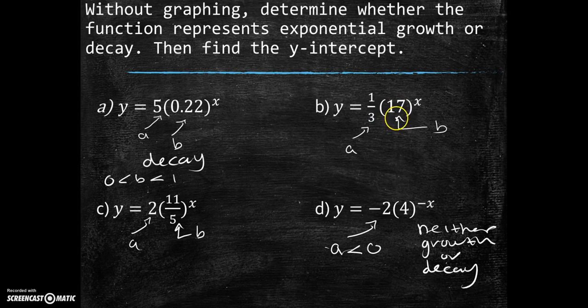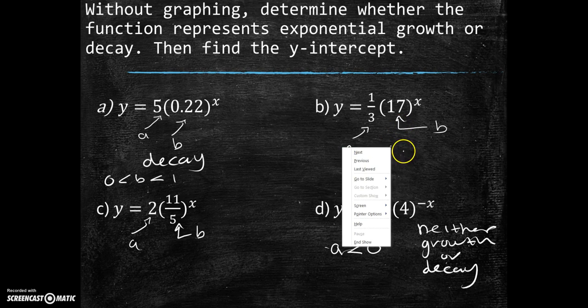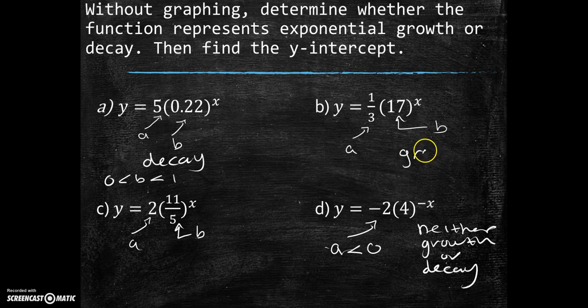Part b. We did determine that it could be growth or decay. The b for this one is 17. Therefore, this is exponential growth. In c, we have 11 over 5, which is a fraction. Is that number bigger than one? Yes. It is bigger than one. Therefore, this is an example of exponential growth.